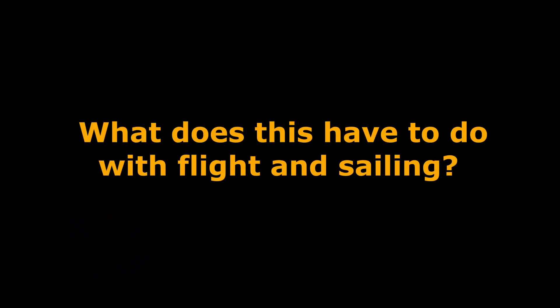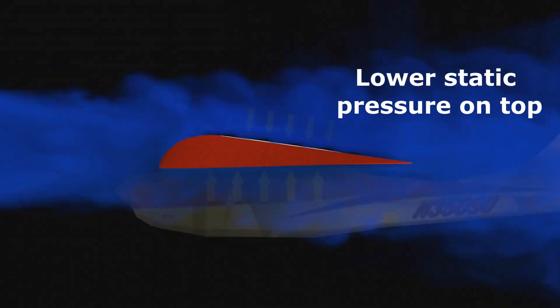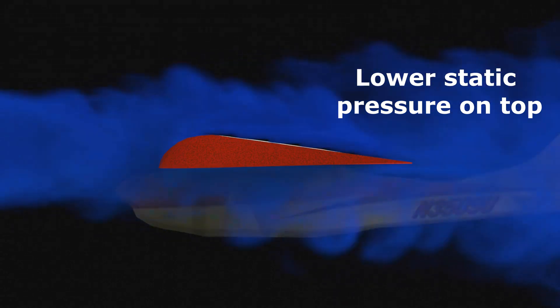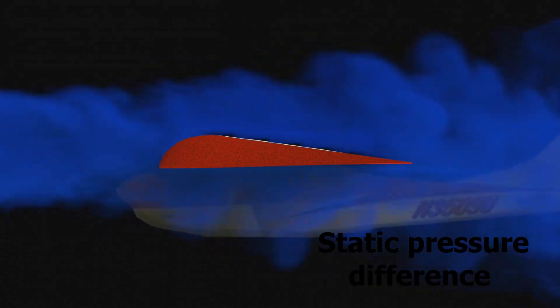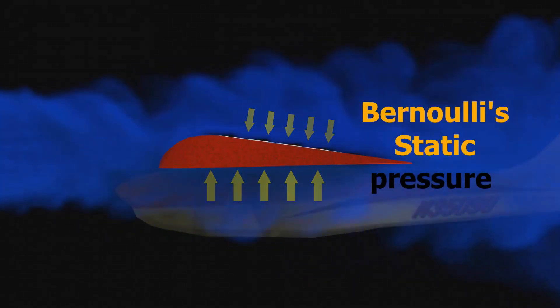So what does this have to do with flight and sailing? On an airplane wing, as the air moves over its upper surface, it has been observed to move faster, like the water flowing in the narrow section of the pipe. Through Bernoulli's principle and the conservation of energy, the static pressure on the upper surface of the wing is reduced. This pressure difference between the upper and lower surfaces results in a lift force causing the plane to rise. I want to emphasize that this is the static pressure, not the dynamic pressure.